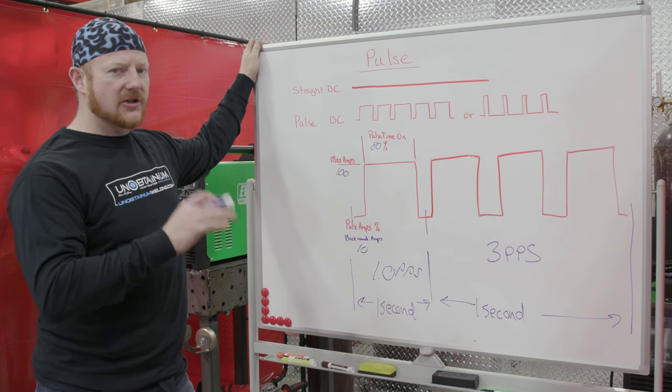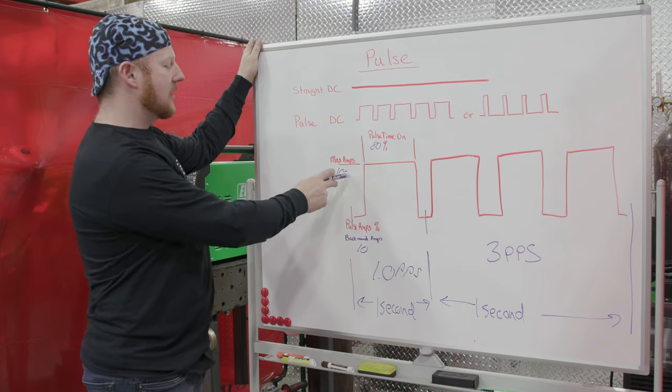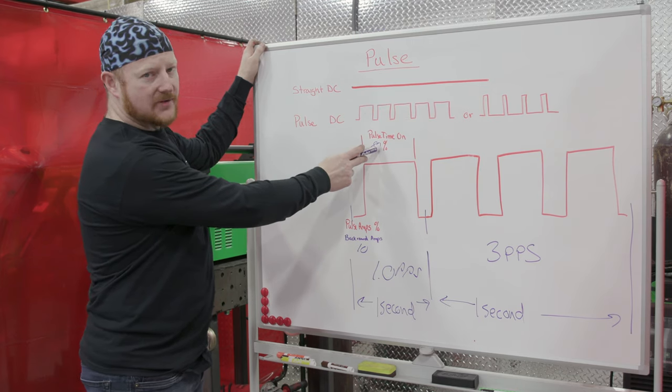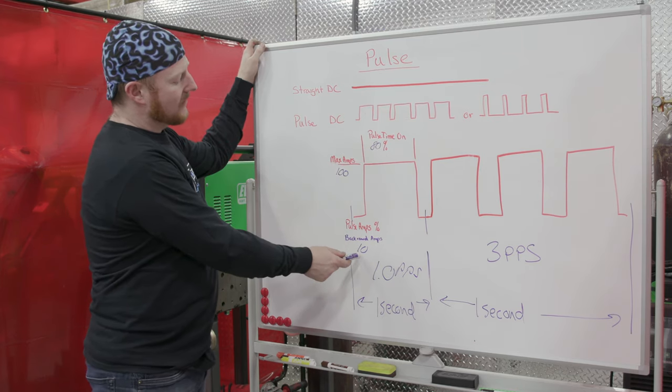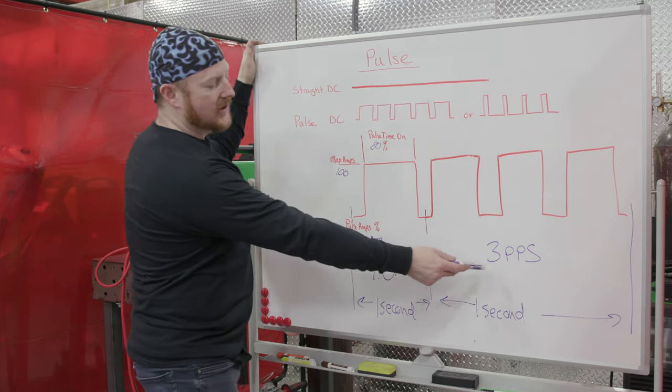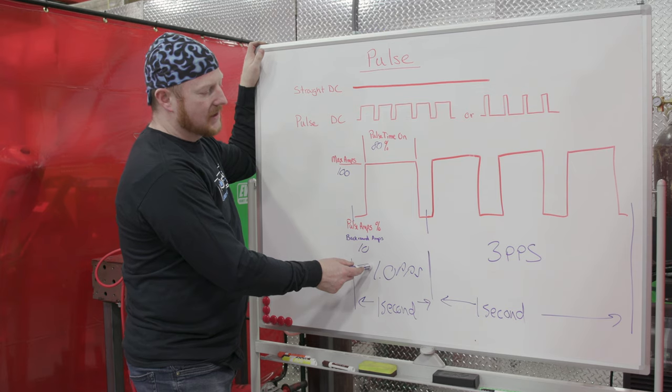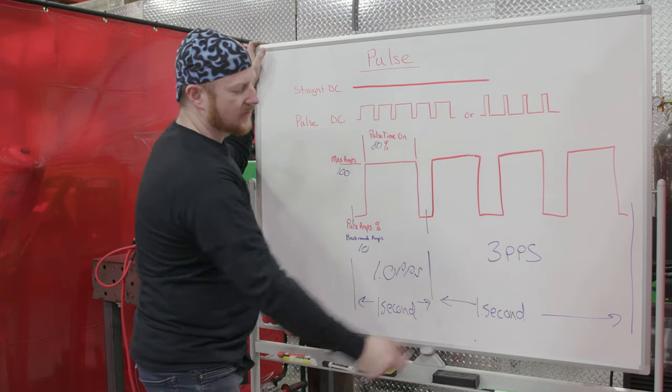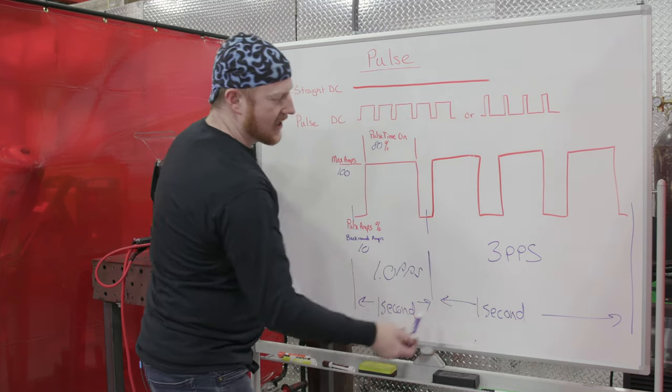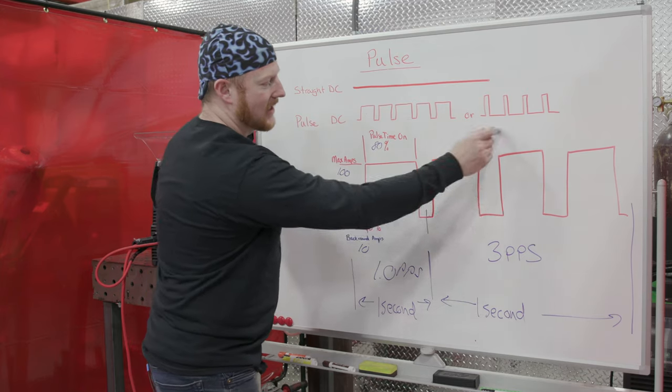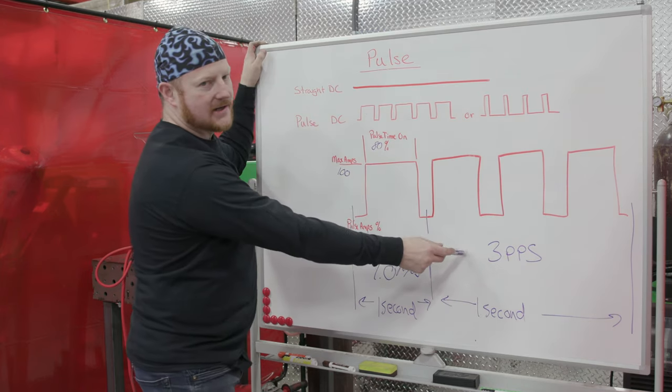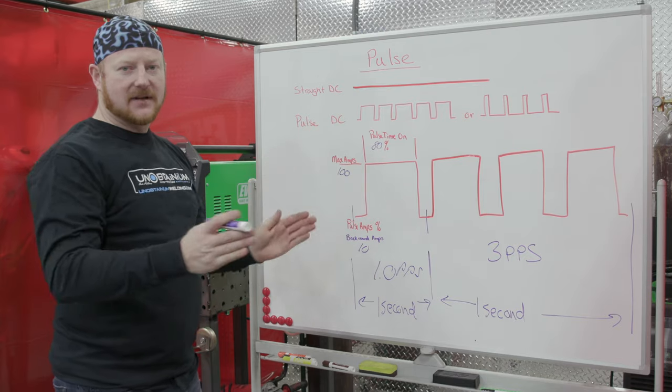So now we're just going to change one variable. We're going to leave our 100 amps and we're going to leave our 80% on time, and we're going to leave our background amps at 10%. But we're going to change our frequency. So from one pulse per second, we're going to go to three pulses per second. So over the same time, we'll be doing this up and down wave three times, and you'll see how that will tighten up the arc.